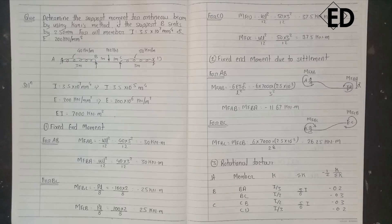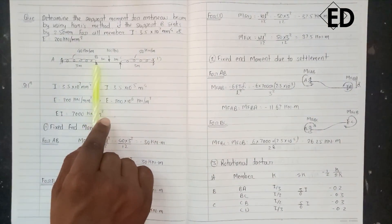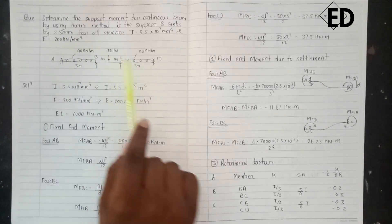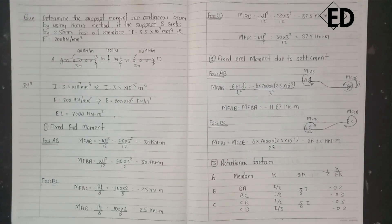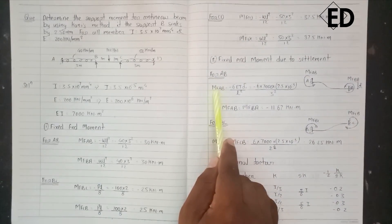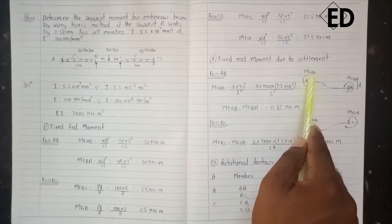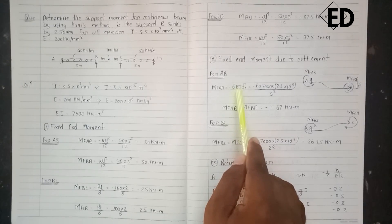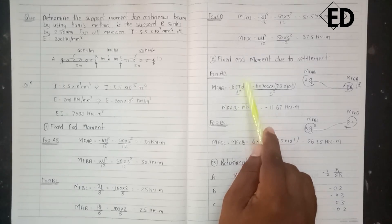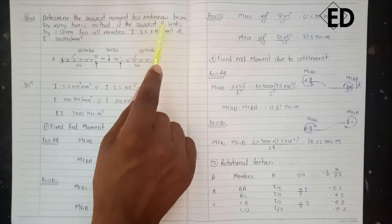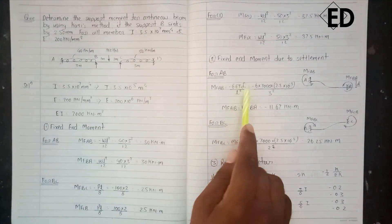Now moving towards our second step. In this question, just the settlement of support B is given. Due to this settlement, the fixed end moment for span AB is given as minus 6EI·δ/L². Here δ is the settlement — support B is sunk by 2.5 mm, so 2.5 mm is δ₁.